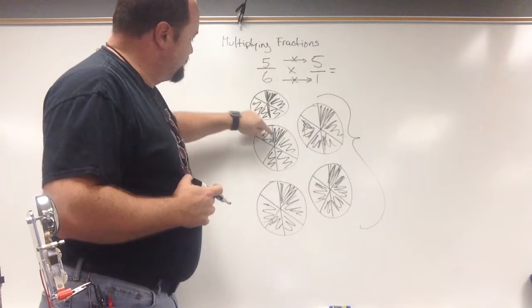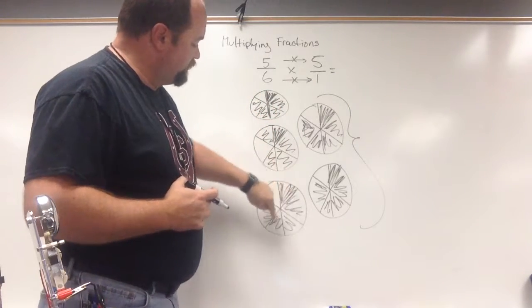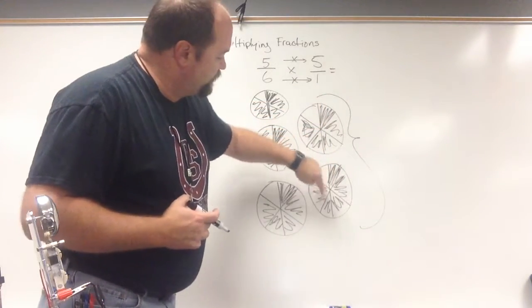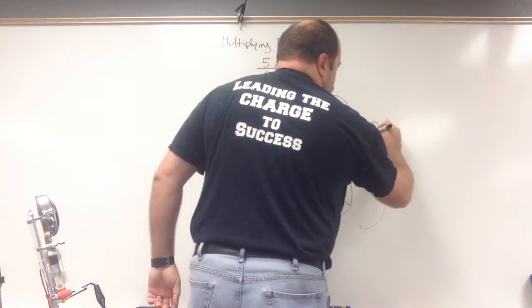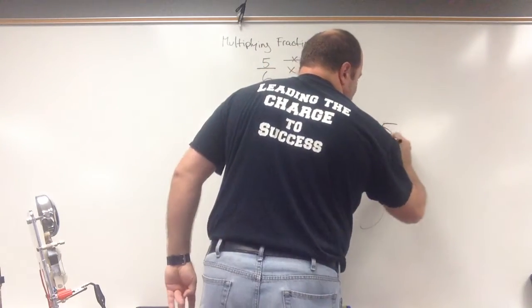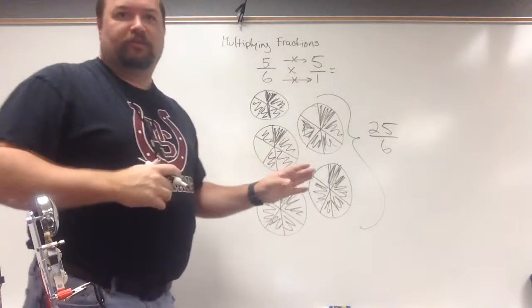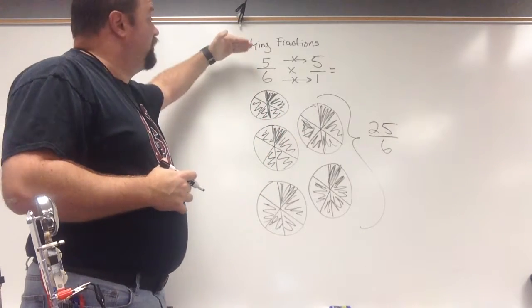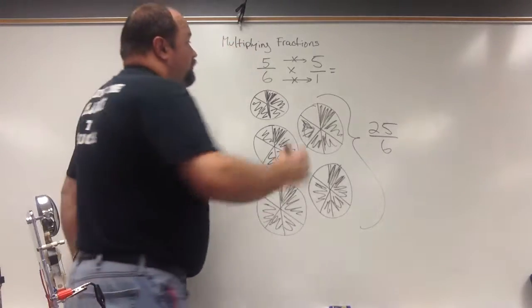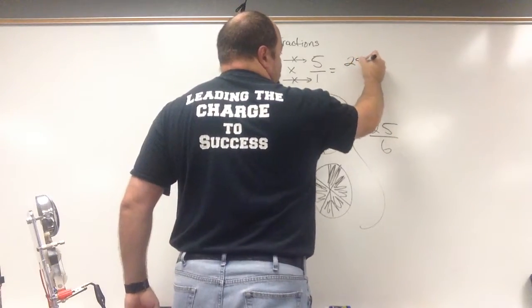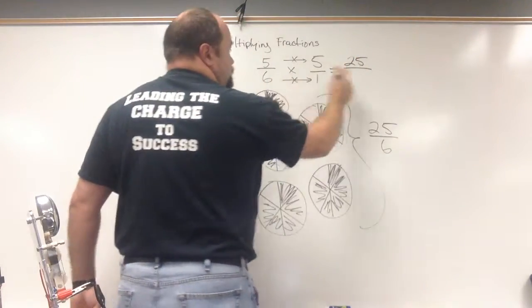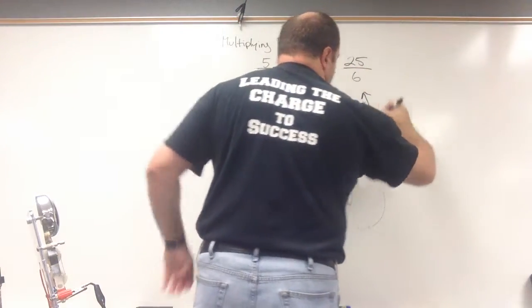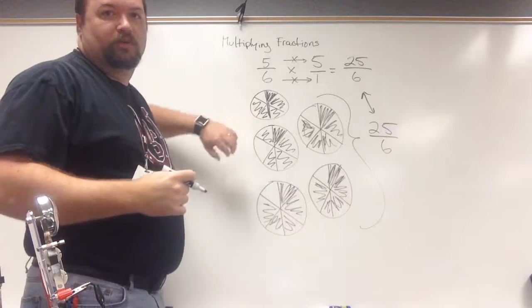All right, so now I've got to figure out how many total sixths do I have. I've got 1, 2, 3, 4, 5, 6, 7, 8, 9, 10, 11, 12, 13, 14, 15, 16, 17, 18, 19, 20, 21, 22, 23, 24, 25. So I have 25 sixths. Now, I know that's an improper fraction. We'll get to that in a second. Let's look back up here at the math, though. So again, multiplying numerator to numerator, 5 times 5 gives me 25, 6 times 1 gives me 6. So both the model and the math will work every time.